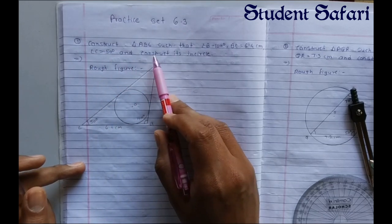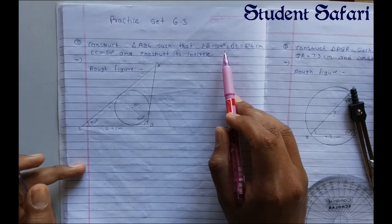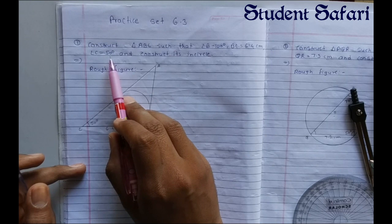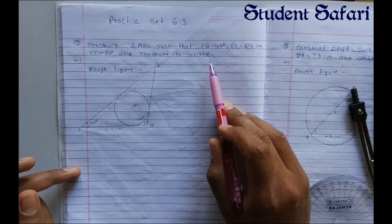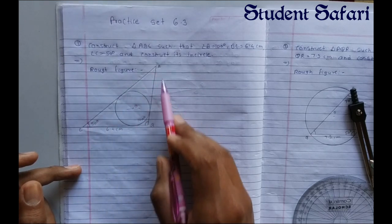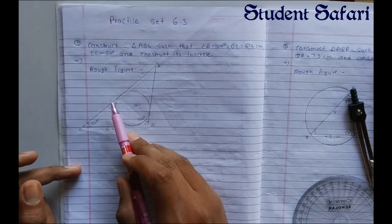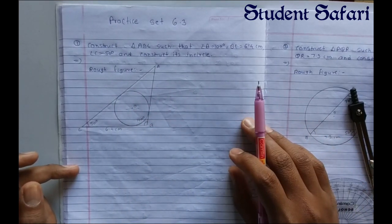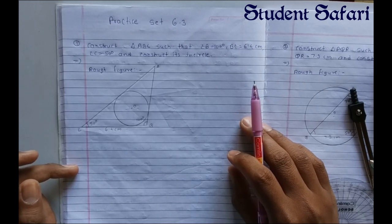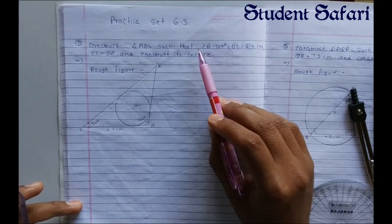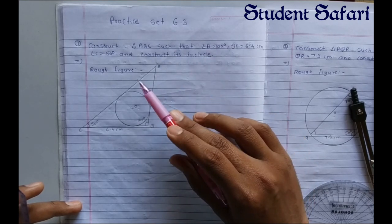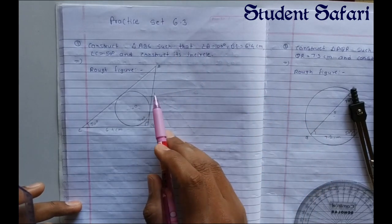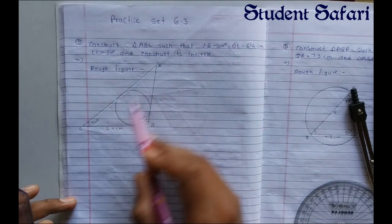The first question: construct triangle ABC such that angle B is equal to 100 degrees, BC is equal to 6.4 centimeters, angle C is equal to 50 degrees, and construct its incircle. I have already drawn a rough figure here to save time so we can understand the fair figure easily. The measurements of triangle ABC are given — side BC is 6.4 centimeters.